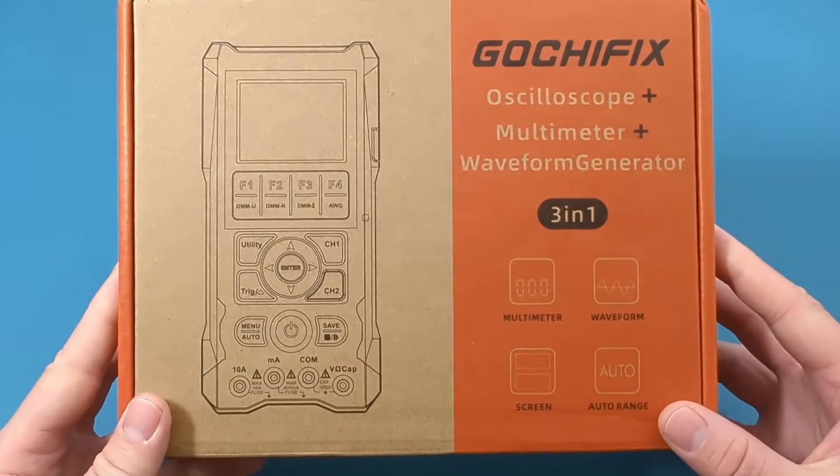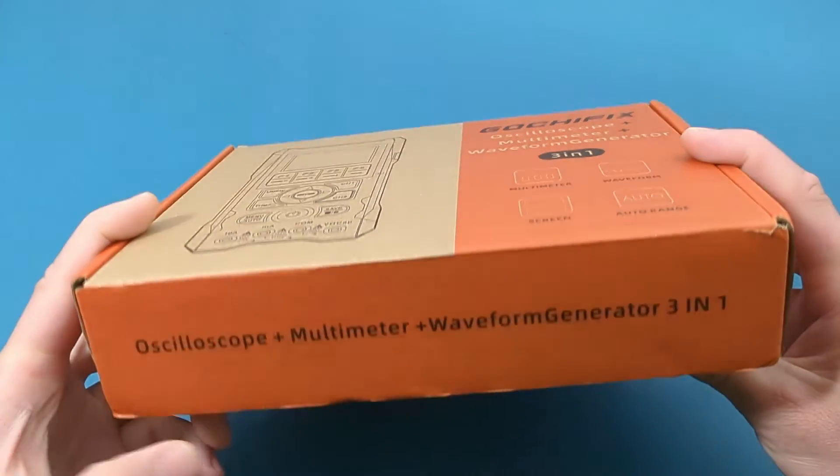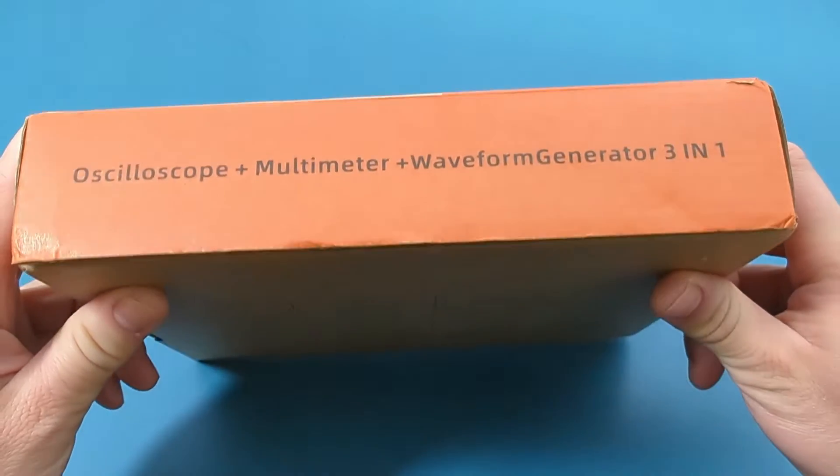This device operates as a multimeter and an oscilloscope, setting it apart from many devices designed to function solely as one or the other. The oscilloscope has two channels and one ground port.